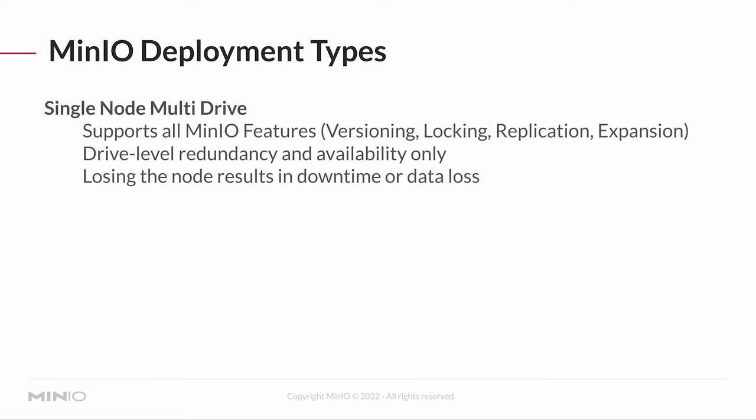A single node with multiple drives does give you replication. It allows you to expand — you can even add more drives as you go. You have drive-level redundancy and availability. It's not going to be in the cloud, and you won't have host-level redundancy. If you lose the node, since there's one node, that's a single point of failure and you will have some downtime or data loss. You could probably get away with this for a beta deployment of your application.